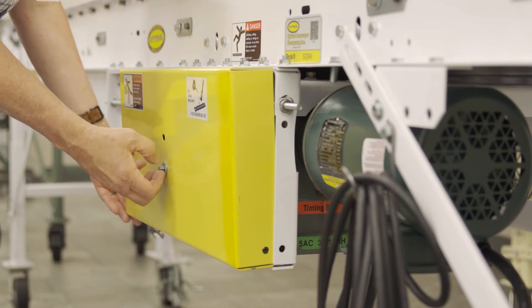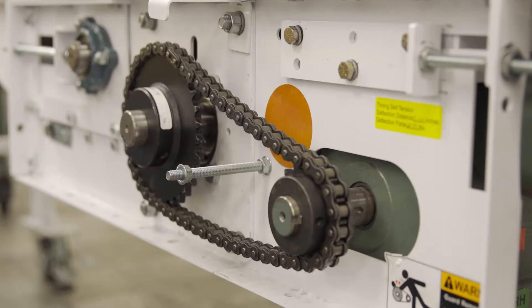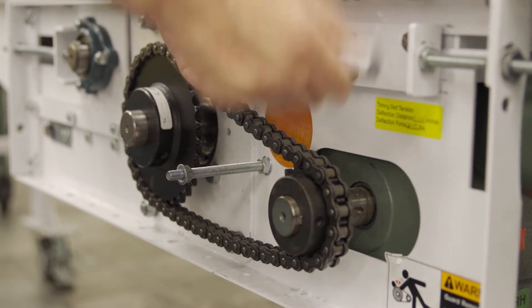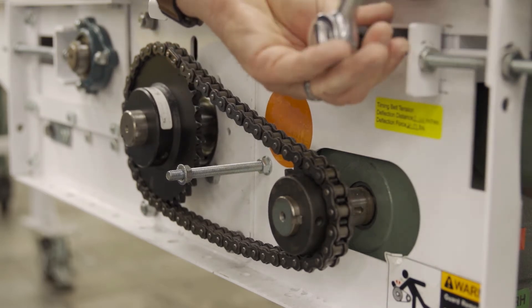Now that the chain, sprockets, and chain take-up assemblies are exposed, loosen but do not completely remove the six gold grade 8 bolts in the drive take-up assembly, three on each side of the drive.